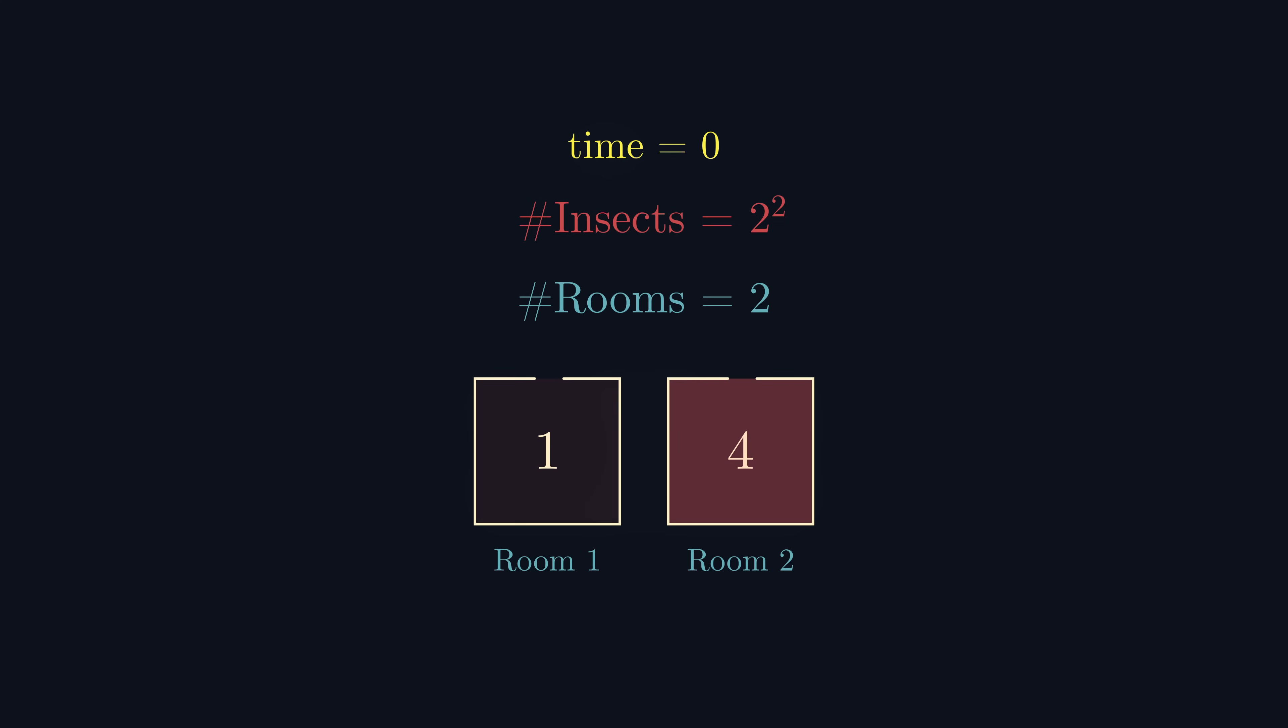With one insect in one room and three in the other, the insect which is on its own is forced to move with the other three, ending us with zero and four again.